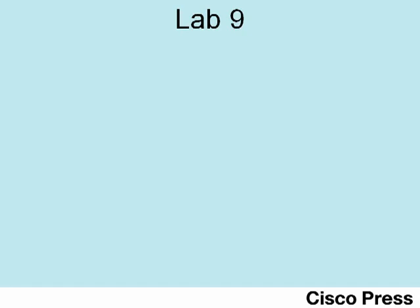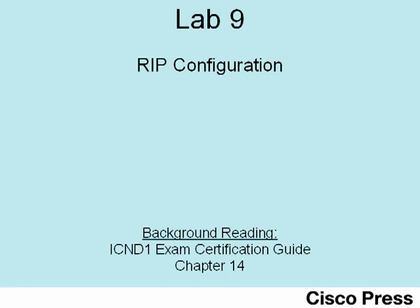Hello and welcome to ICND1 Lab 9, which shows how to configure RIP with default version settings as well as how to configure a network of three routers to use RIP version 2. For those of you using the Cisco Press exam certification guides, note that the material covered in this video is also covered in the ICND1 book's chapter 14.